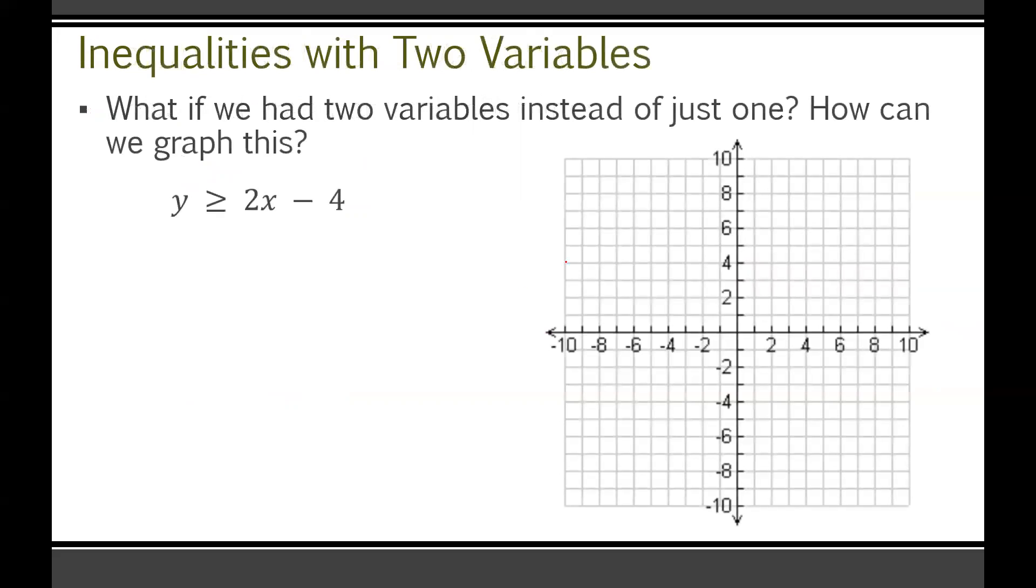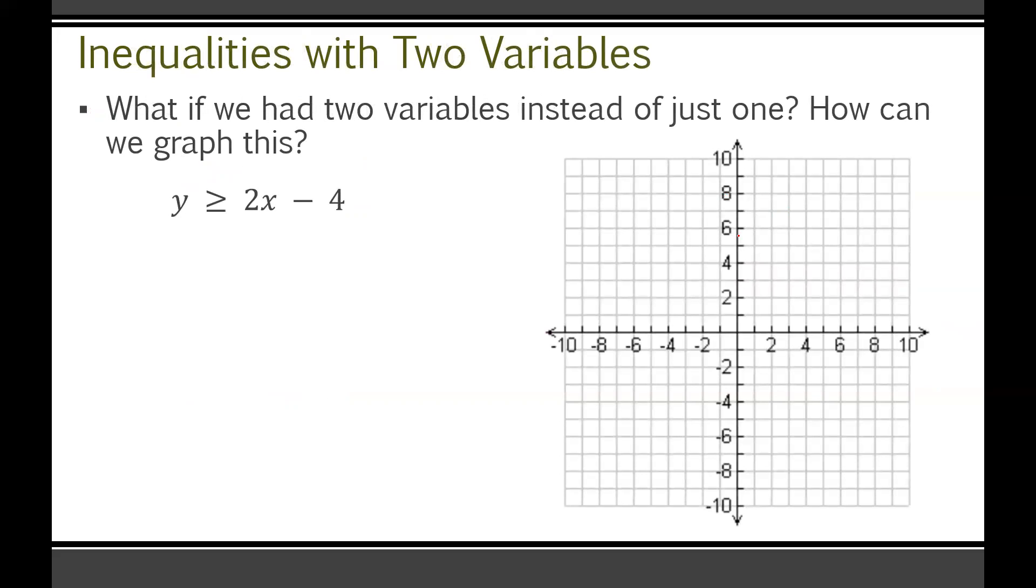So what if we had two variables instead of just one? How can we graph this? You can graph this the same way that you'd graph a normal two-variable equation. If this was y equals 2x minus 4, you would just graph that line 2x minus 4. However, this is y is greater than or equal to 2x minus 4. So there's going to be a bit of an extra step here.